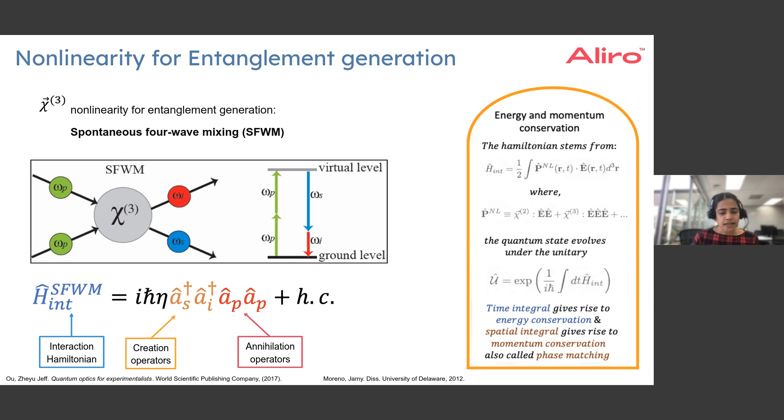By extending this, we can also learn about what happens in a chi-3 nonlinear system or the third-order nonlinearity, and how we can use this to generate entangled photons.